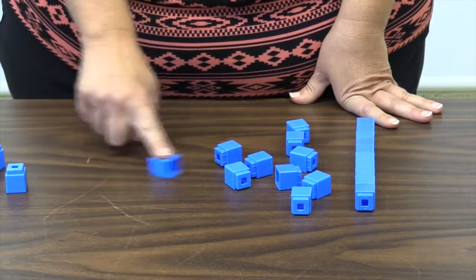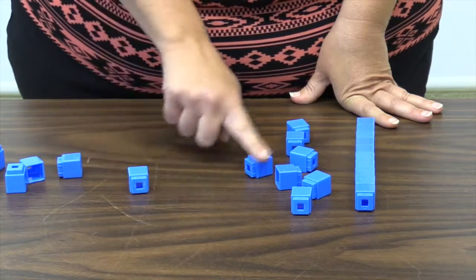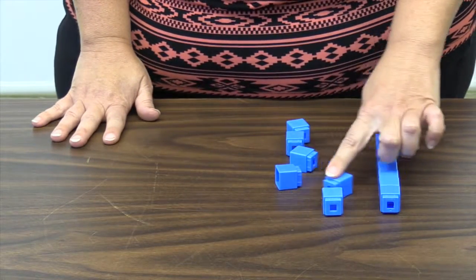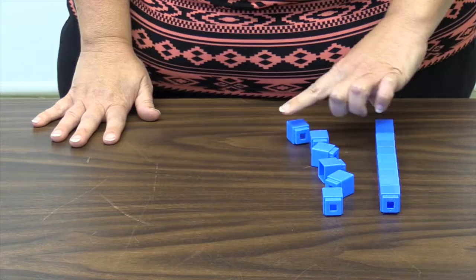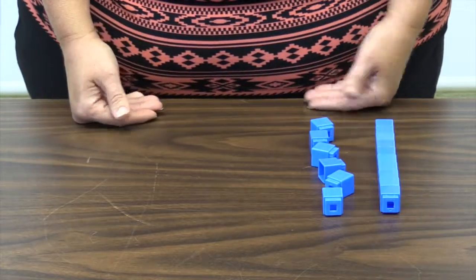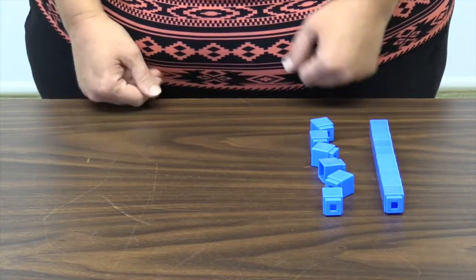One, two, three, four, five, six. Now we count for the result. Ten, eleven, twelve, thirteen, fourteen, fifteen, sixteen. The result is sixteen chips, or one ten and six ones.